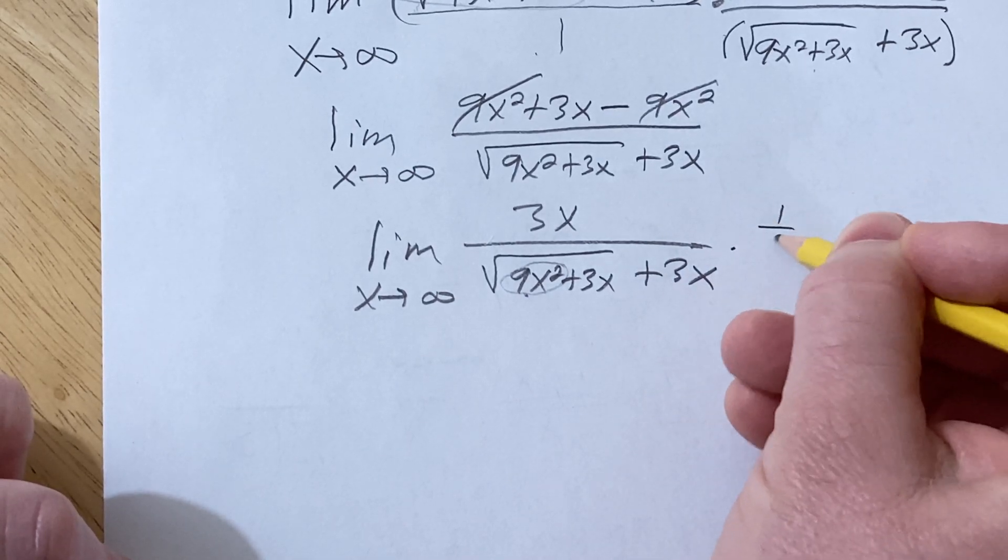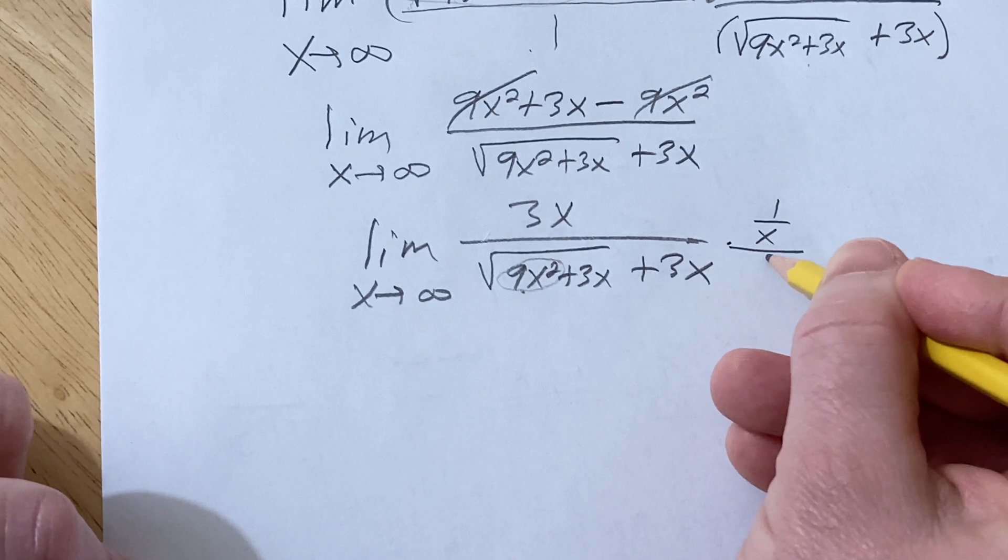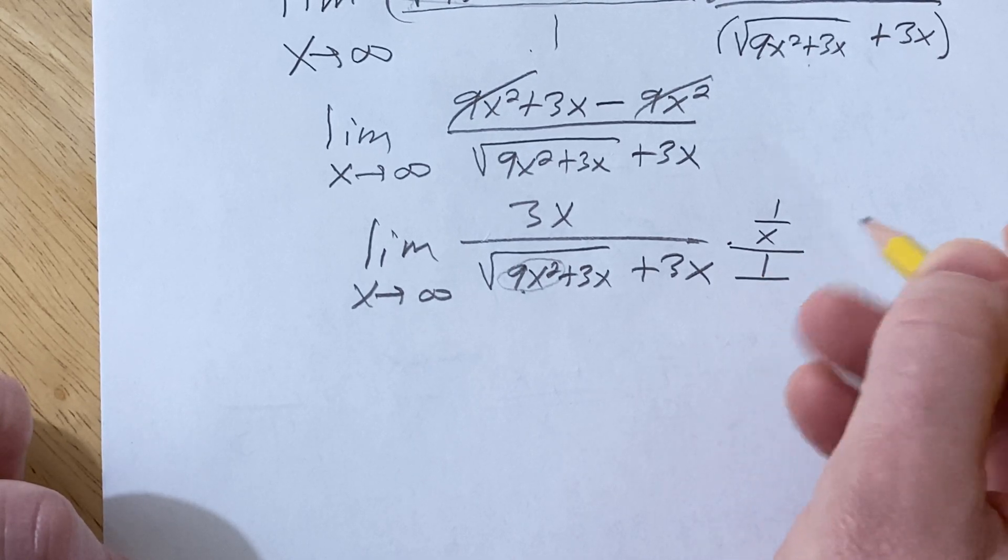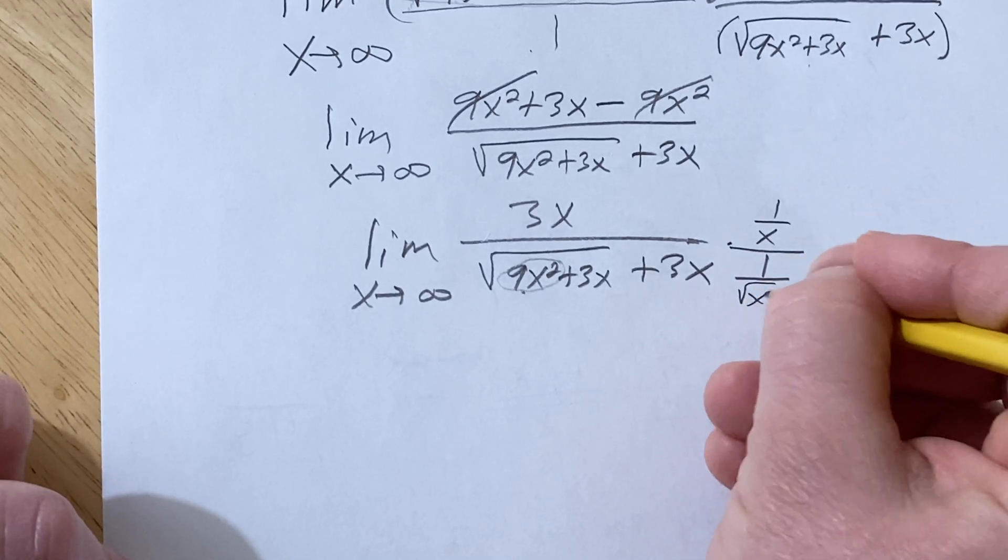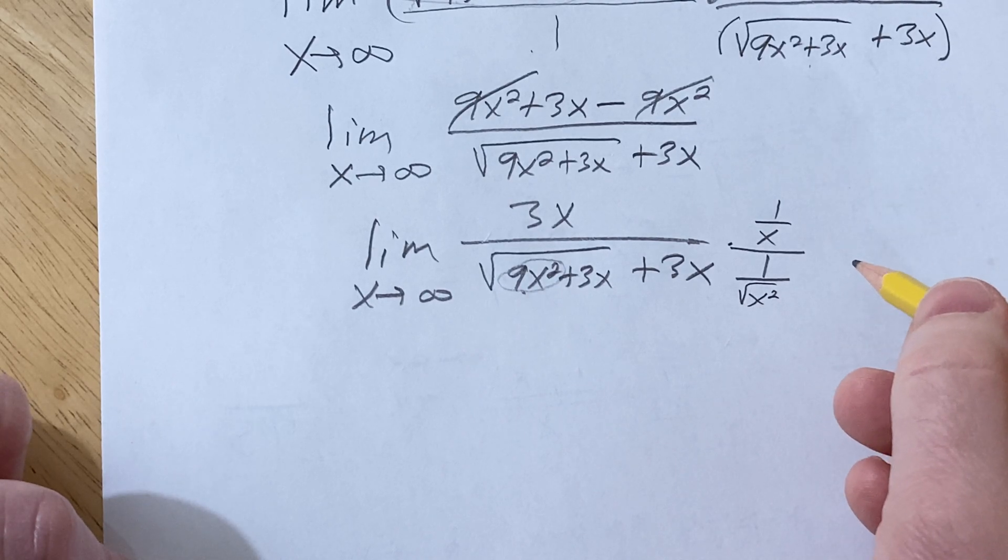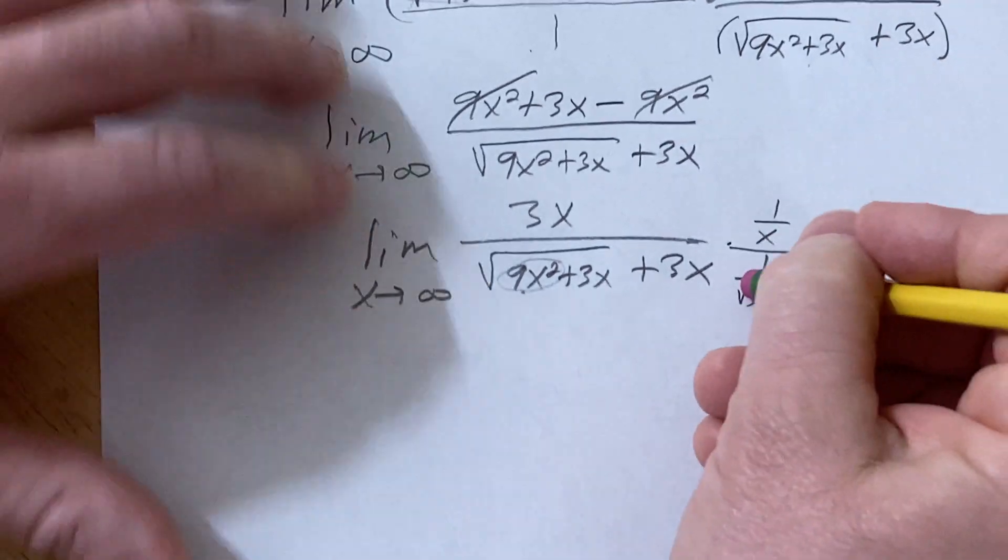So what I'm going to do is I'm going to do the following. I'm going to multiply this by 1 over x, and then I'm going to multiply this by 1 over the square root of x squared. Now realize here that, actually, I'm just going to do 1 over x.